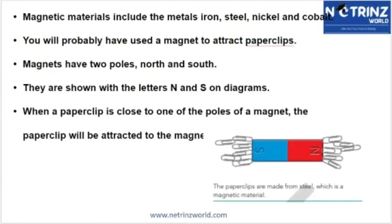A magnet has two poles: the north pole, denoted as N, and the south pole, denoted as S. Towards the left is the south pole and towards the right is the north pole, shown with the letters N and S. When a paper clip is close to either pole of the magnet, it will be attracted towards the magnet. The paper clip can be attracted to either the south or north pole.